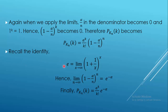We recall the identity e = lim_{x→∞} (1 + 1/x)^x. Applying this, (1 − α/n)^n → e^(−α) as n→∞. Substituting, we get P(X=k) = e^(−α) · α^k / k!, which is exactly the Poisson PMF.